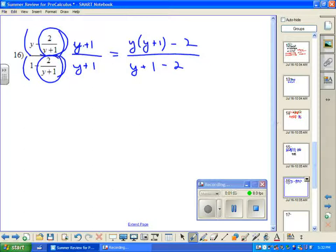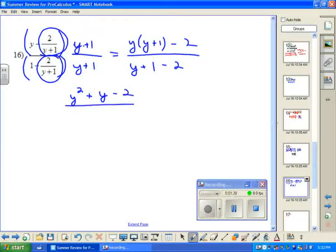And now the only thing I have left to do is to combine like terms, multiply things out. Maybe something will factor. Let's see. We'd have y squared plus y minus 2. And in the denominator, we'd have y minus 1.